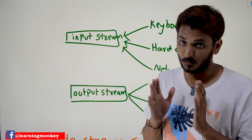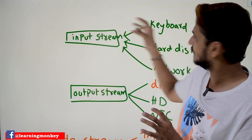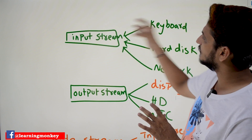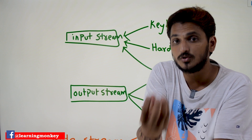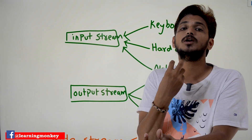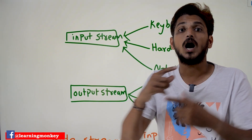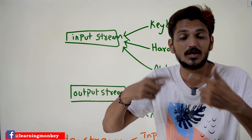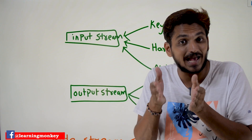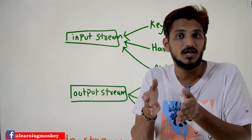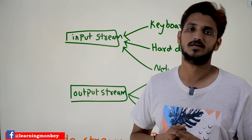The point you need to understand: from here onwards, whenever the data comes from the keyboard to the input stream, we need to read the data into our program. How do we need to read the data? What are the classes that are available for that? These are the points we need to understand.